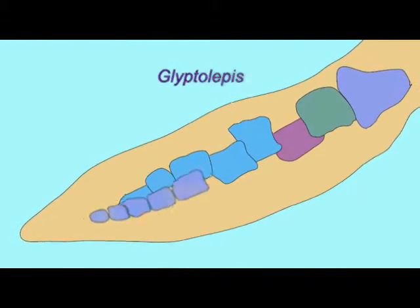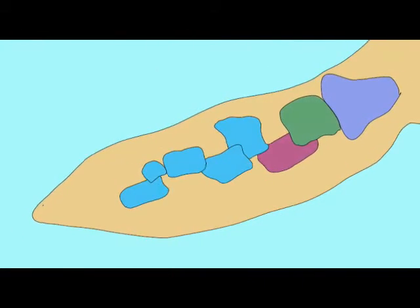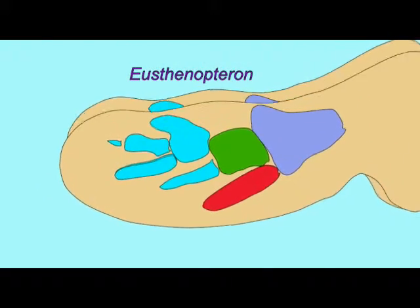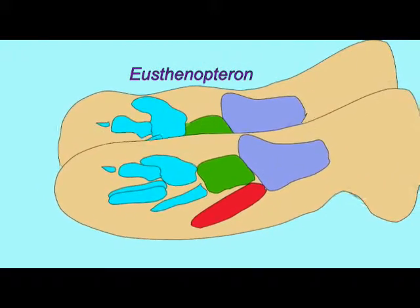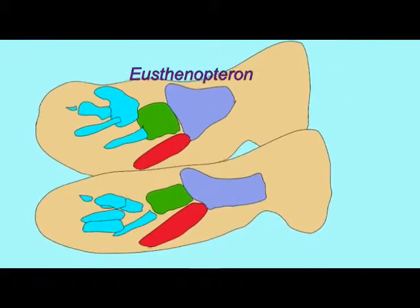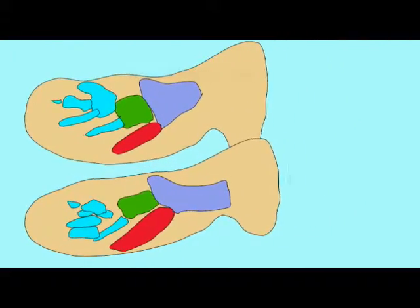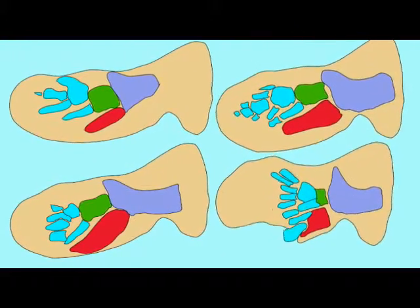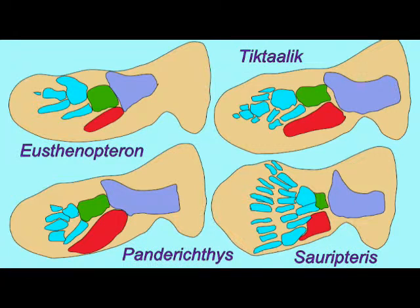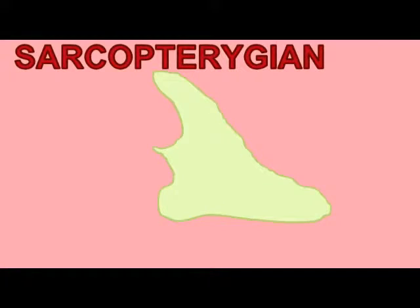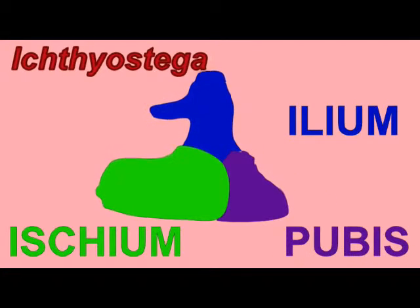Irreducible complexity is the idea that complex traits cannot evolve in steps because if only half of a certain structure were present, or only part of it, it would be non-functional, and any animal that possessed it would simply die. So dinosaurs could not evolve into birds because what good is half the ability to fly, or half a feather, or half a wing?